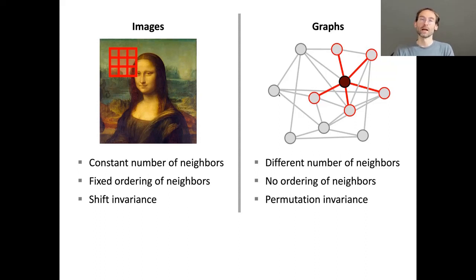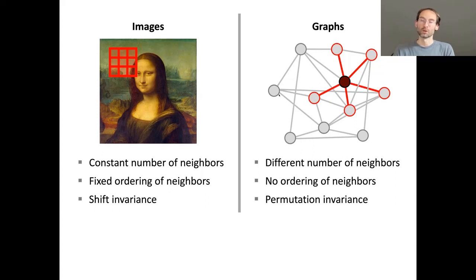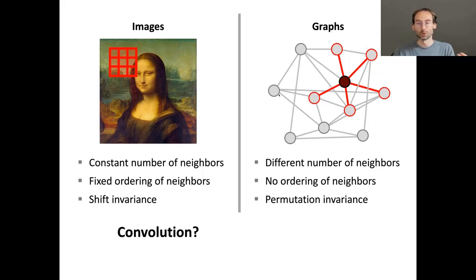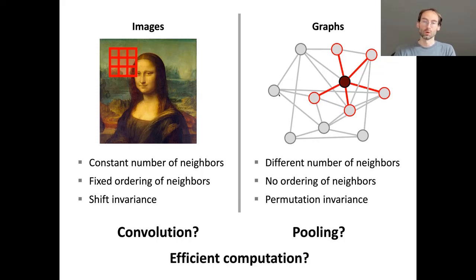Looking at the difference between images and graphs: in an image we have a very regular structure — if we take a pixel and open a window around it, we always have a fixed number of neighbors that come in a fixed order. On graphs, the situation is very different: the number of neighbors varies — in social networks there are very popular users with millions of followers and ordinary users with a few thousand. Also we have no canonical way of ordering the neighbors. As a result, the kind of invariance we get will be very different. The question is how to generalize the building blocks of CNNs to graphs: convolution, pooling, and efficient computation.